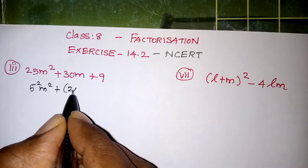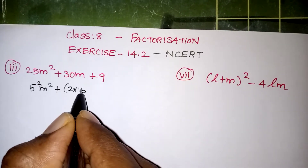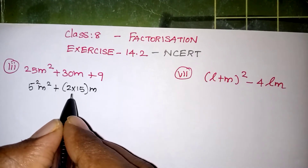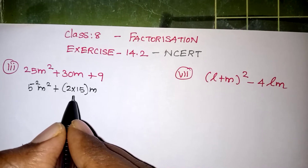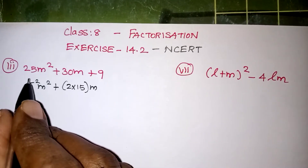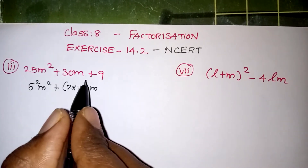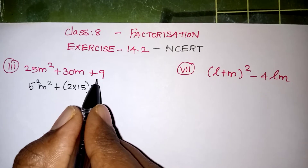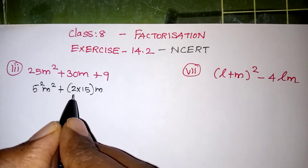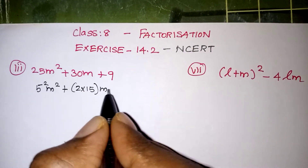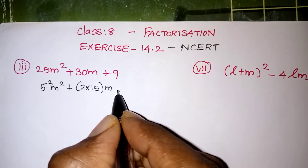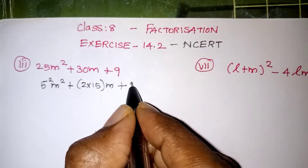30m can be written as 2 into 15m. We split with 2 because for all problems where the first and last numbers are perfect squares, we split the middle term with only 2. The center number will definitely come in the 2 times table. So 2 into 15, plus 9 can be written as 3 squared.